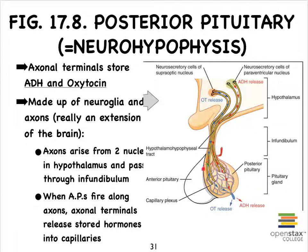Here is our posterior pituitary, and notice that it receives axons — and axonal terminals — that start all the way in the hypothalamus. In the hypothalamus are the cell bodies of these neurons, clustered into two separate nuclei. It is in these cell bodies where the hormones oxytocin and ADH are synthesized, and these hormones can actually be stored in the axonal terminals.